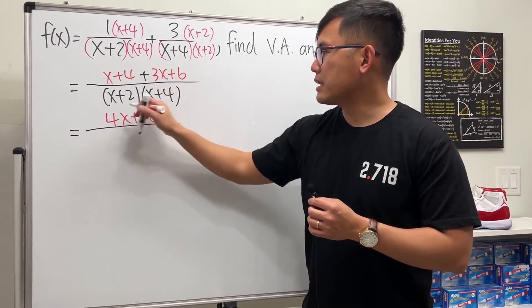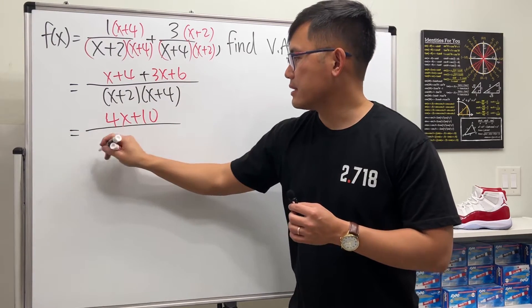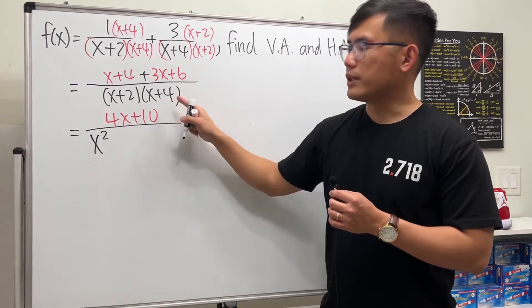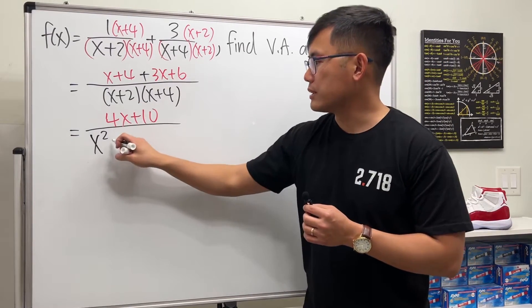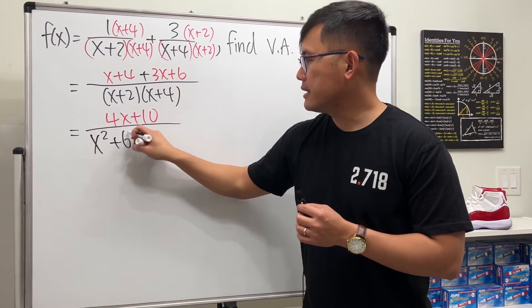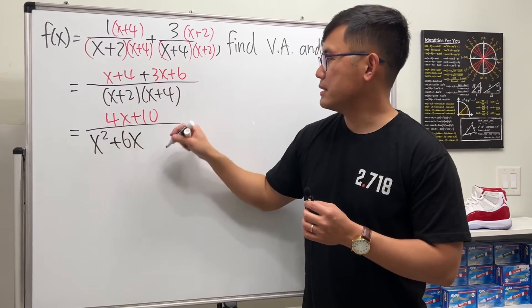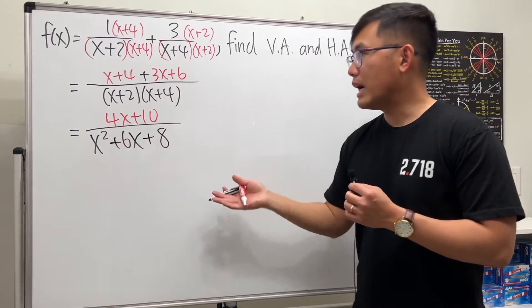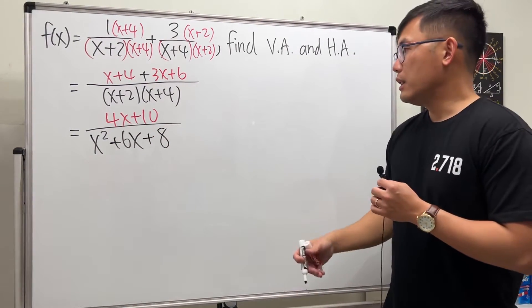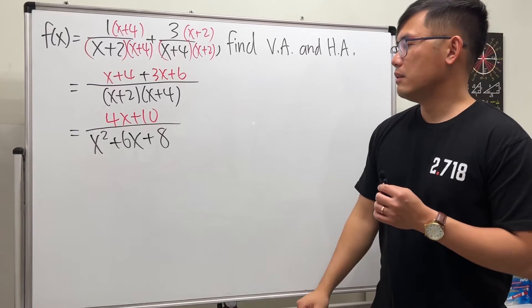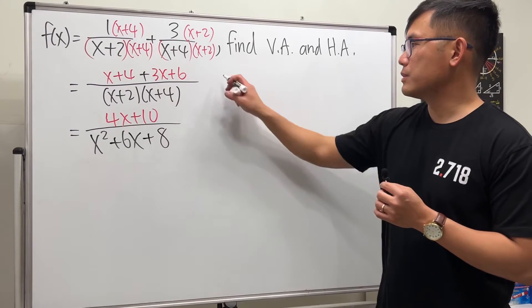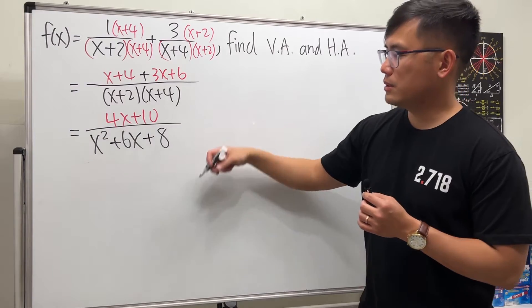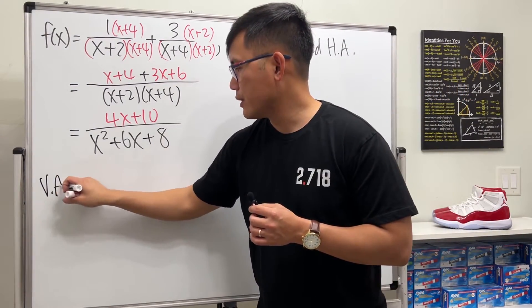And the bottom, if we multiply it out, x times x is x², x times 4 is 4x, plus 2x, so that's plus 6x, and lastly 2 times 4 is plus 8. So that's f(x): (4x+10)/(x²+6x+8). Now let's go ahead and find the vertical asymptotes.